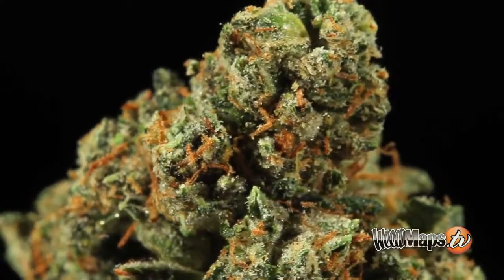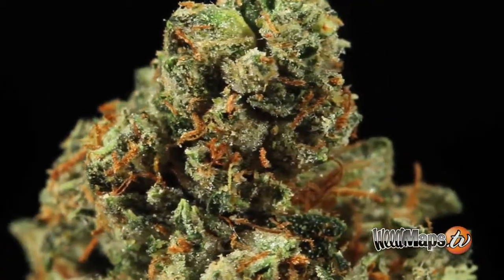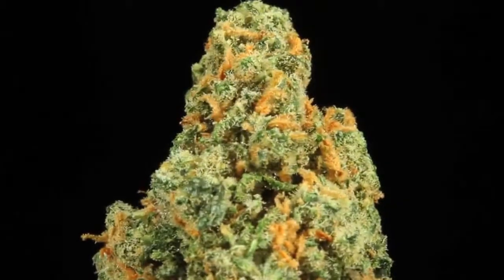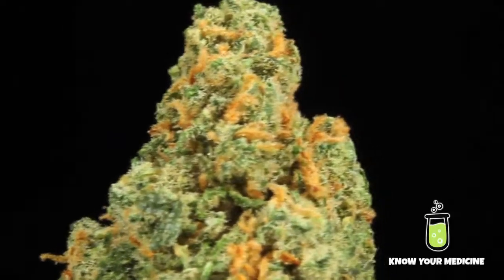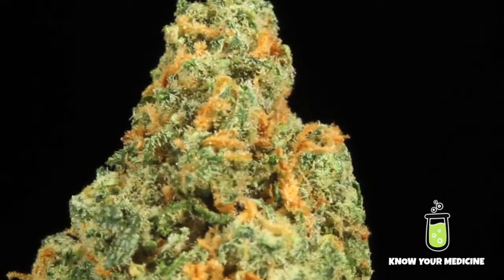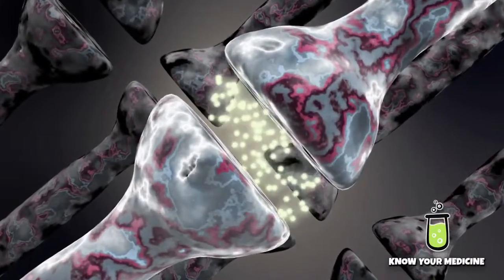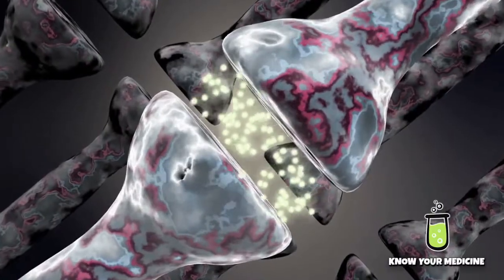They're all somewhat similar to the cannabinoids in chemical structure, so they can definitely have interesting effects, and the terpenoids on their own have been found to have different medical benefits. For example, beta-caryophyllene is one of the few non-cannabinoids that is known to actually activate the CB2 receptor. It's also known as an anti-inflammatory.